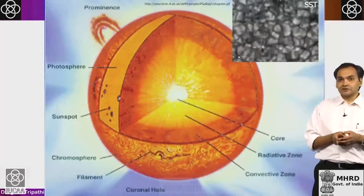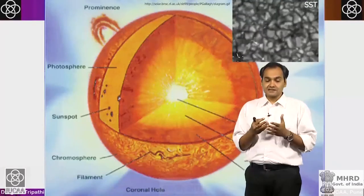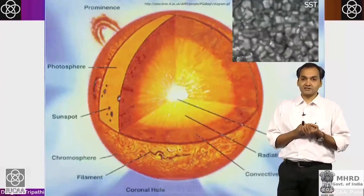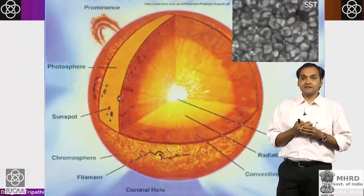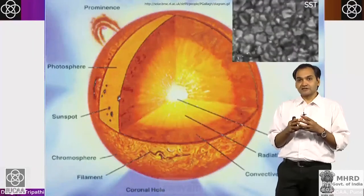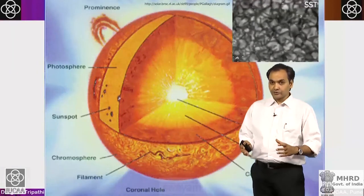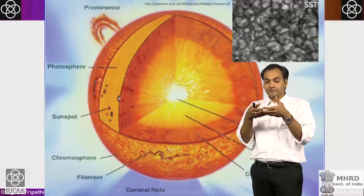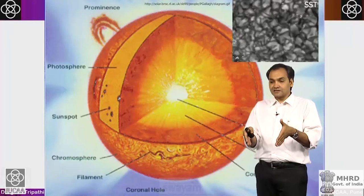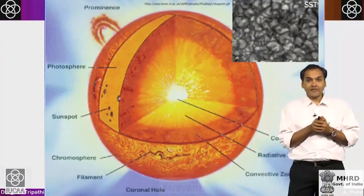Here is an animation showing convection: bright blobs — granules — are coming and going, surrounded by dark lanes. Hot bubbles bring energy upward and then cool down, sinking back through the dark lanes. This is essentially like boiling water in a kettle. The granular patterns show that energy is brought out by these hot convection cells.